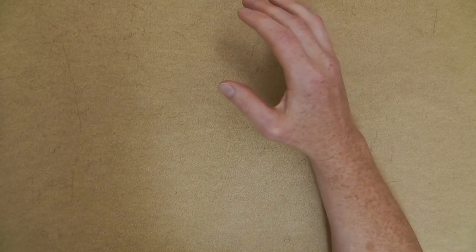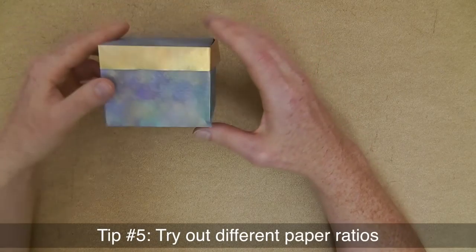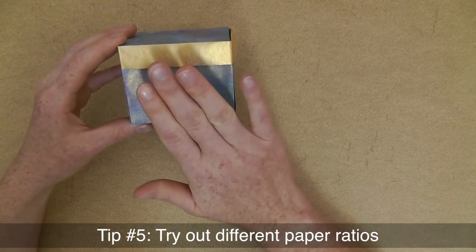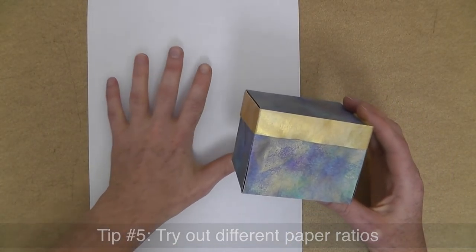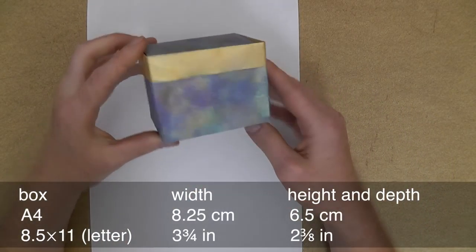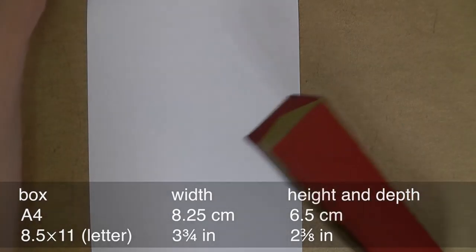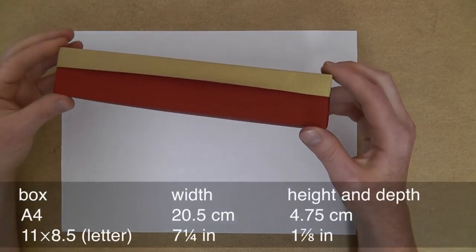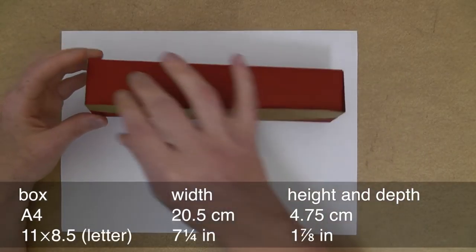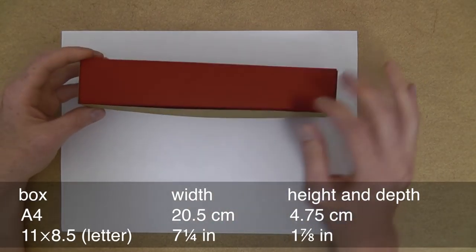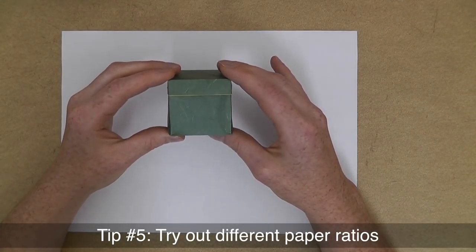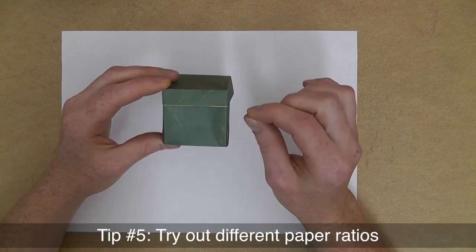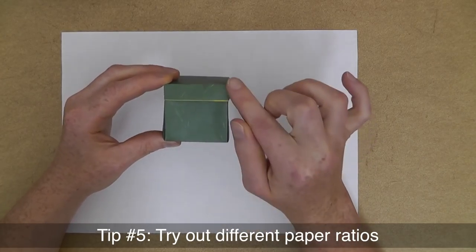And tip number five is really the longest tip of all, and that's the different paper ratios. Now, you might want to fold a box from some printer paper. And if you go ahead and use it in portrait mode, you're going to get a box with these dimensions. And if you're going to move it over to landscape mode, you're going to get a very long box. And this might be nice if you want to store some pens or perhaps give away a necklace or a bracelet or something like that. But of course, you might also want to get that special square box.